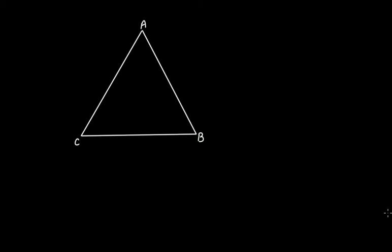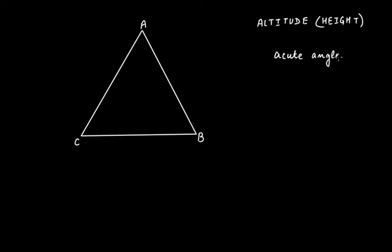Let's talk about heights or altitudes of a triangle. This is triangle ABC where all the angles are acute angles. The term 'height,' also known as altitude, tells about the height of a vertex from a base. So if this is vertex A, the opposite side to this vertex A will also be called the base.